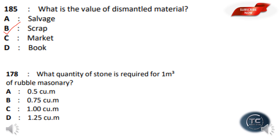What quantity of stone is required for 1 m³ of rubble masonry? The answer is Option D — 1.25 m³.